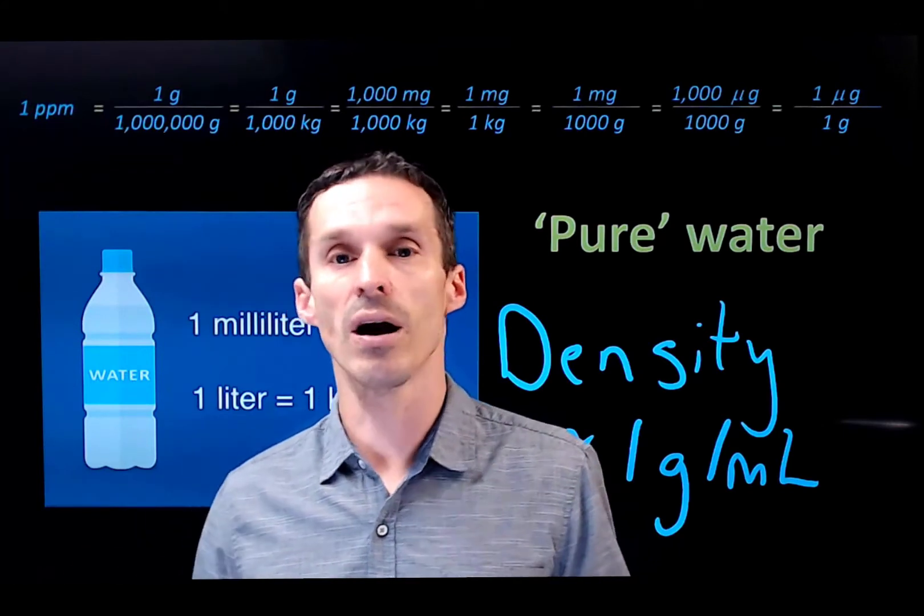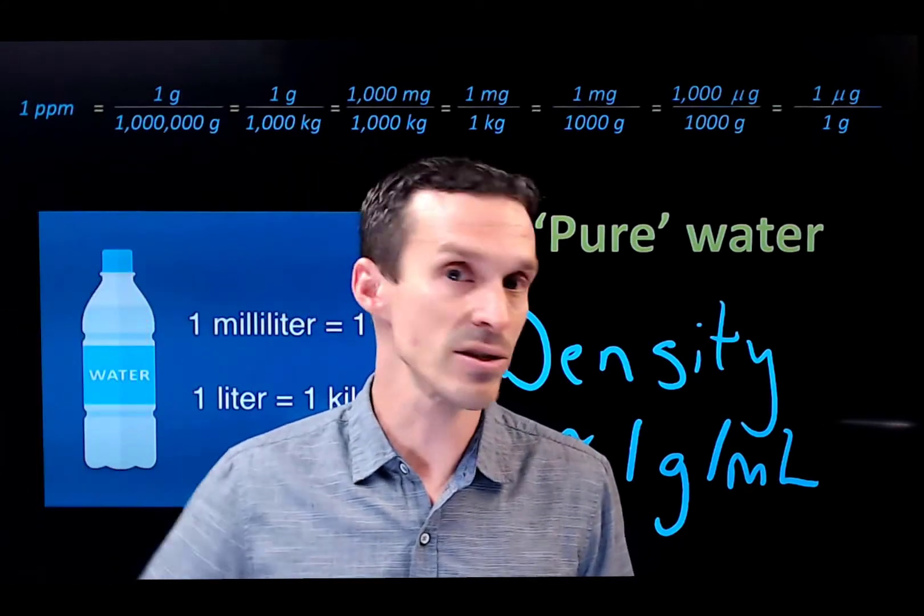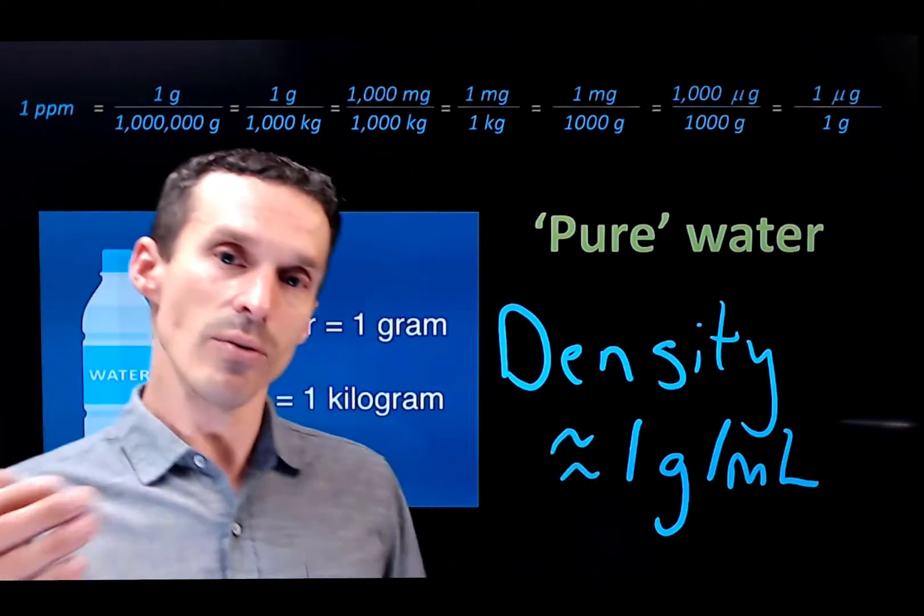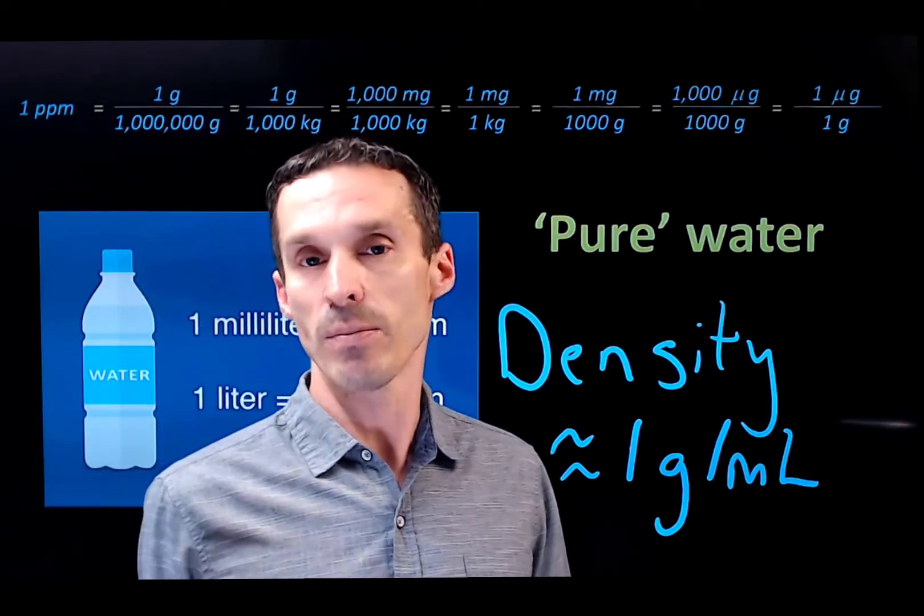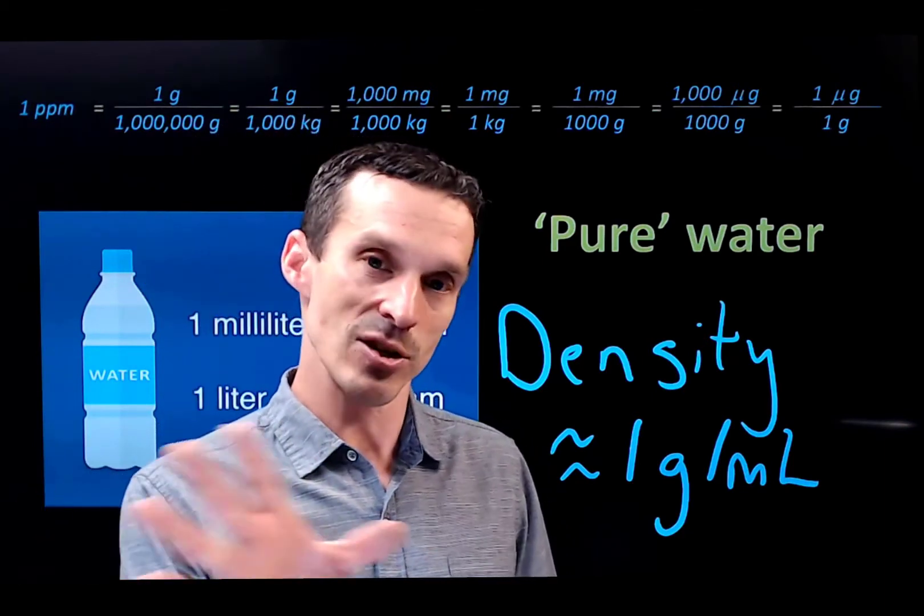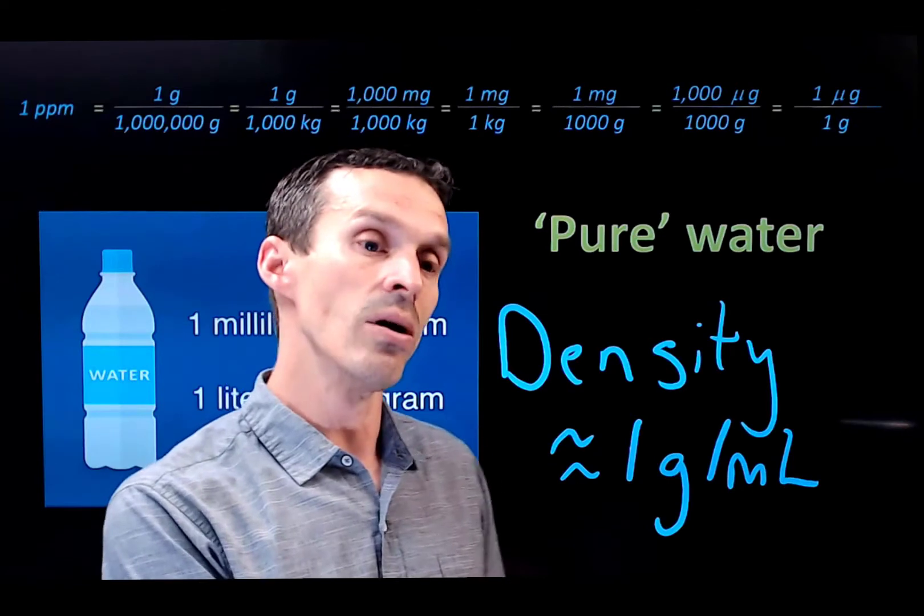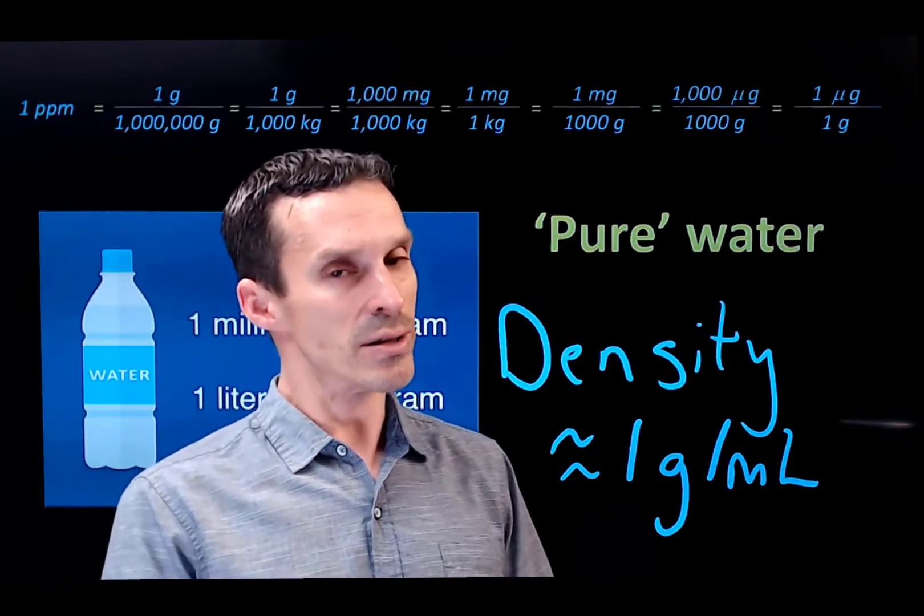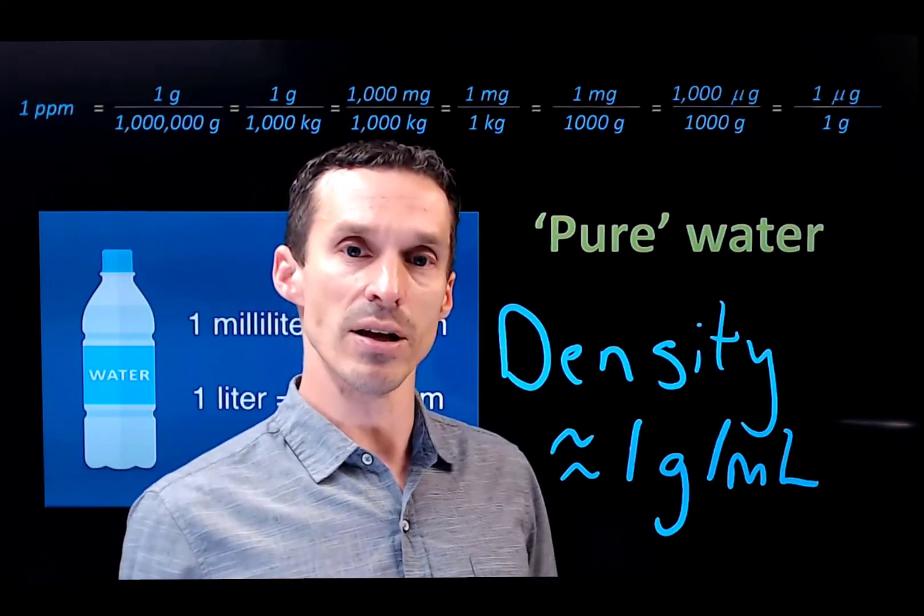So if the sample is really concentrated, like a heavy saltwater solution, the density would be higher than one. So you do have to keep care for that. But in cases where the concentration is really low, we're in the parts per million range, the density is fair enough to say that it's one.